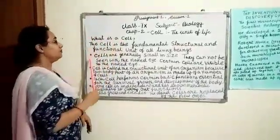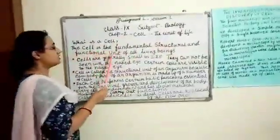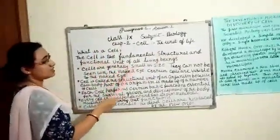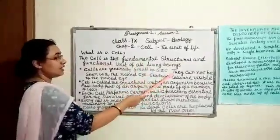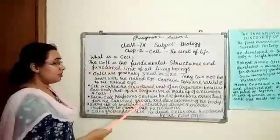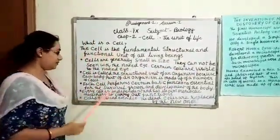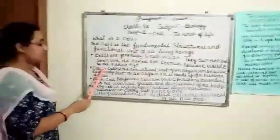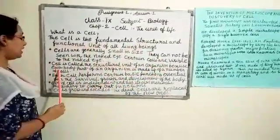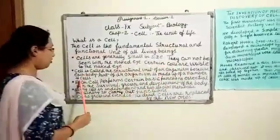What is a cell? The cell is the fundamental, structural and functional unit of all living beings. Cells are generally small in size. They cannot be seen with the naked eye — they are microscopic. However, certain cells are visible to the naked eye. Cell is called the structural unit of an organism because each body part of an organism is made up of a number of cells.